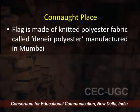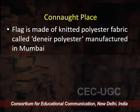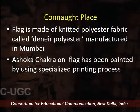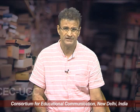The flag is made of knitted polyester fabric called denier polyester, manufactured in Mumbai. The Ashok Chakra on the flag has been painted using a specialized printing process. All sorts of care have been taken so that the best quality is provided, making it an important landmark. After that, flags have been installed in different parts of the city by the government.